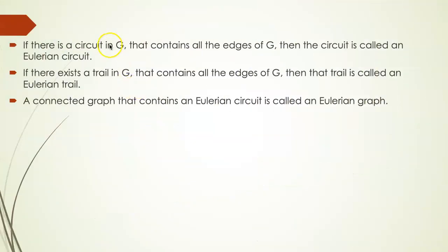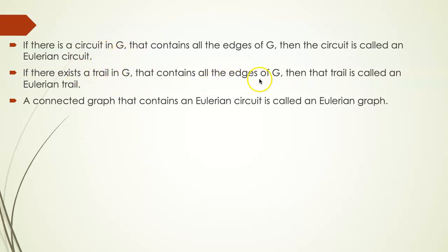If there is a circuit in G that contains all the edges of G, then that circuit is called an Eulerian circuit. A circuit is a trail where each edge is covered only once. And if there exists a trail in G that contains all the edges of G, then that trail is called an Eulerian trail.